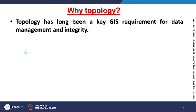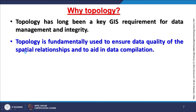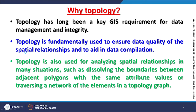Topology has long been a key GIS requirement for data management and integrity. Initially it was not present, then it had to be built manually, but now it is built automatically during digitization. Topology is used to ensure data quality, minimize errors, maintain spatial relationships, and aid in data compilation. It is also used for analyzing spatial relationships such as dissolving boundaries between polygons with the same attribute values or traversing a network of elements in a topology graph.